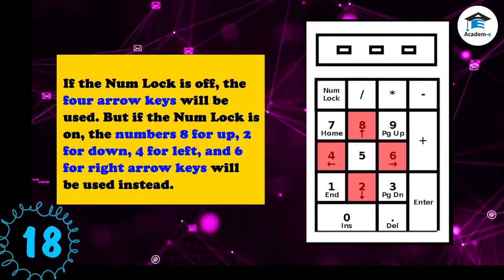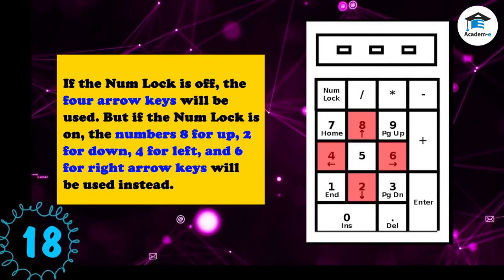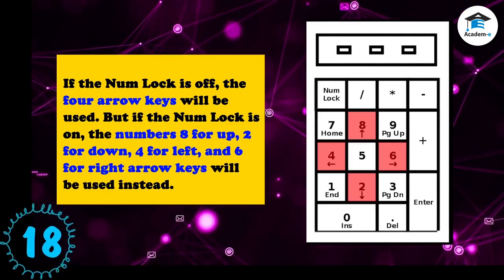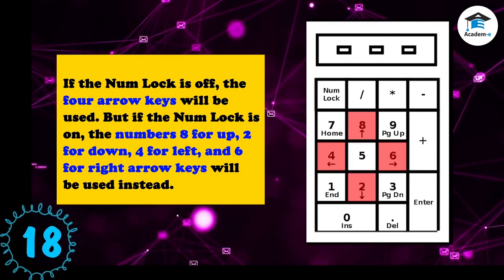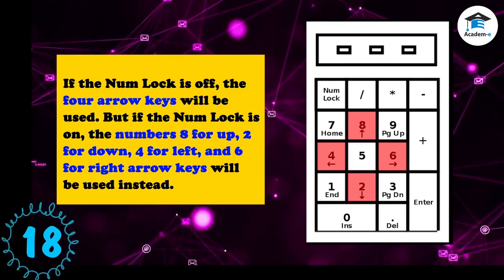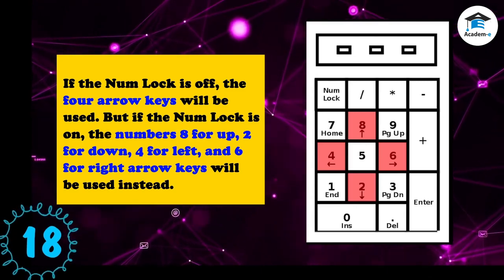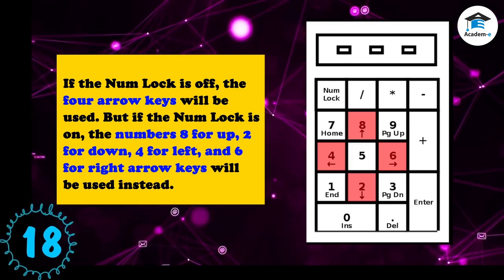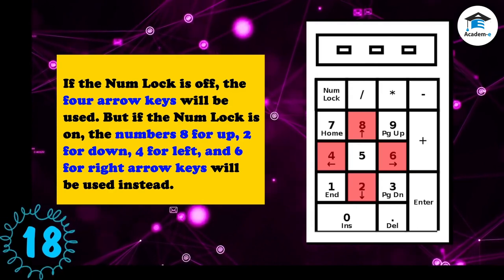If the Num Lock is off, the four arrow keys will be used. But if the Num Lock is on, the numbers 8 for up, 2 for down, 4 for left, and 6 for right arrow keys will be used instead.